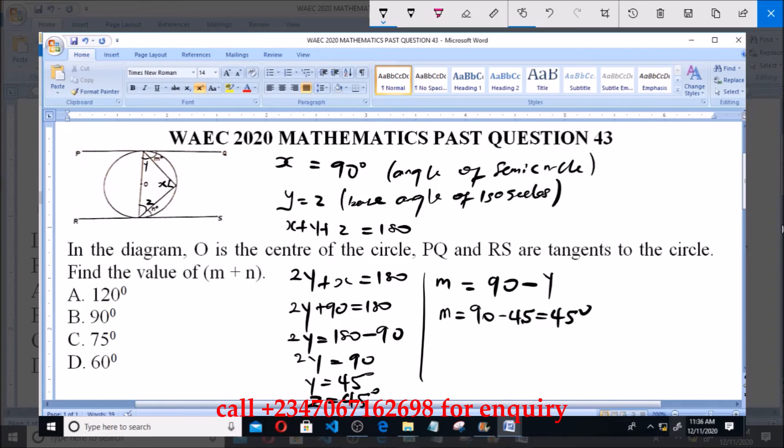Also, N plus Z equals 90 degrees, the same right angle with the tangent RS. Therefore, N equals 90 minus 45, and that equals 45 degrees also.